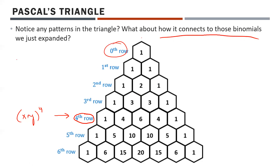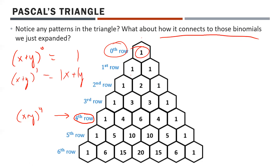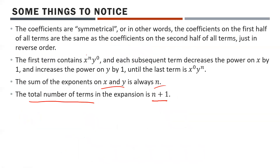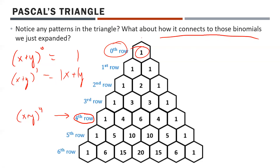The zeroth row is called that because x plus y to the power of 0 is just 1 — that's the only thing there. x plus y to the power of 1 is just x plus y, and the coefficients on both are 1 and 1. As long as you follow the patterns — the power on x starts at maximum and works down, while the power on y starts at 0 and goes up — Pascal's Triangle connects directly to your binomial expansion.